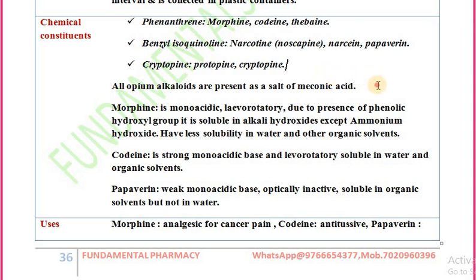An important point: all opium alkaloids are present as salts of meconic acid. Morphine is a monoacidic, levo-rotatory base. Due to the presence of a phenolic hydroxyl group, it is soluble in alkali hydroxide but not in ammonium hydroxide. Opium alkaloids are soluble in alkali hydroxide except ammonium hydroxide, and have less solubility in water and other organic solvents.